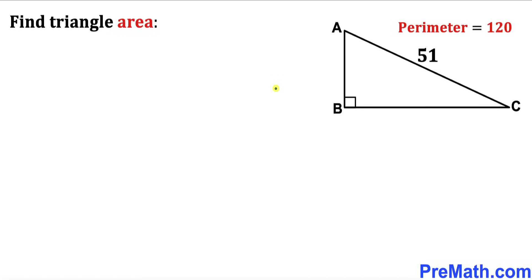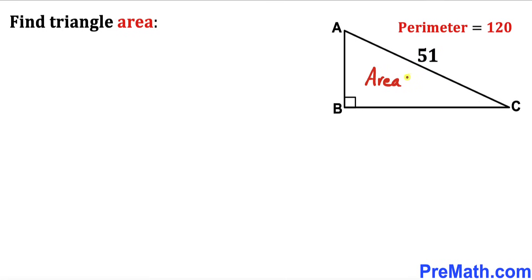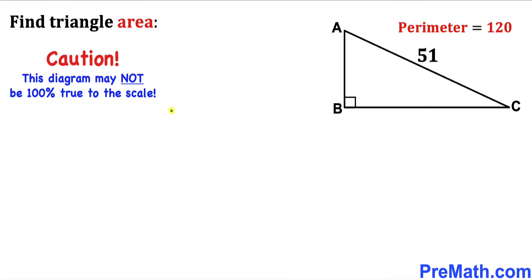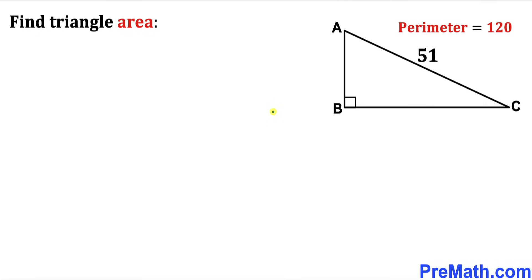Welcome to pre-math. In this video we have a right triangle ABC, as you can see in this diagram, such that its perimeter is 120 units and its hypotenuse AC is 51. Our task is to calculate the area of this triangle. Please don't forget to give a thumbs up and subscribe. Keep in mind that this figure may not be 100% true to scale. Let's get started.